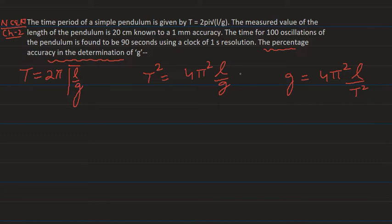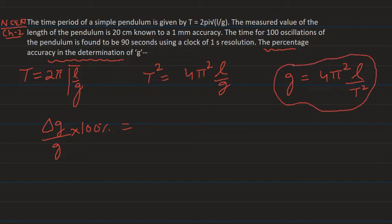We are asked for the percentage accuracy in the determination of g, which means we have to calculate (δg/g) × 100%. This equals δL/L + 2 × δT/T, all multiplied by 100%.